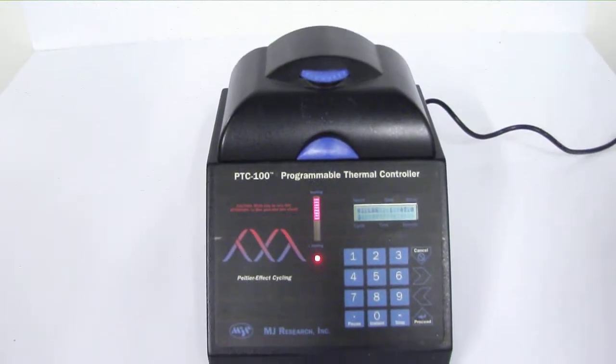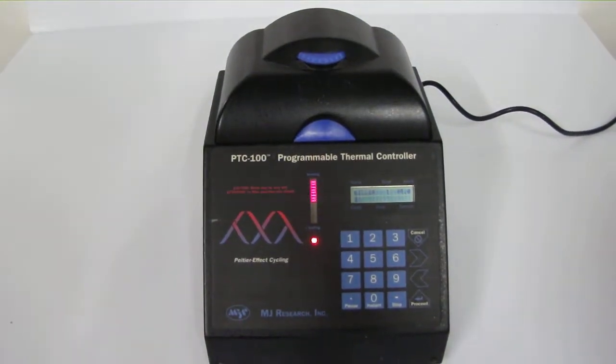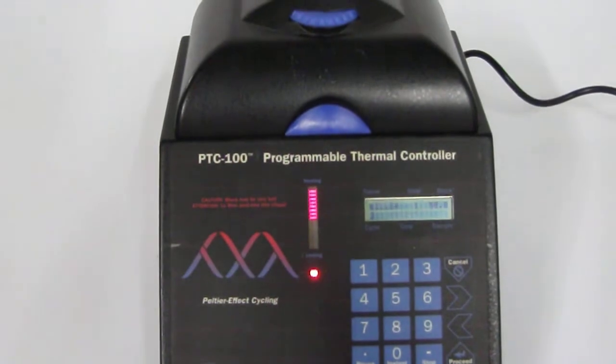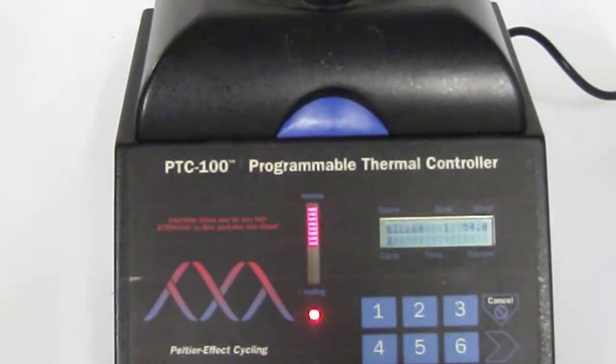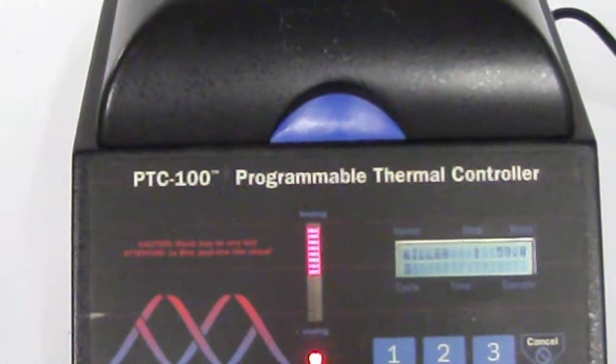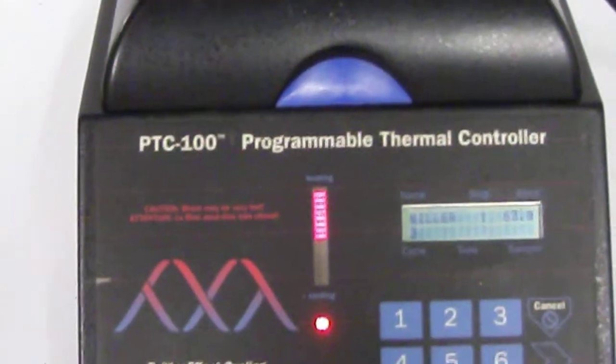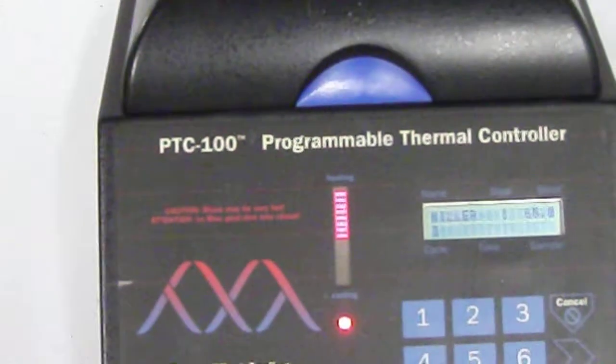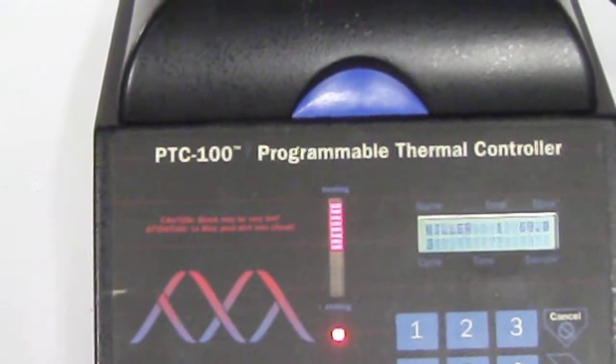In addition, it has the following features. Peltier Effect heat pumps, robustly designed for repeated cycling, deliver the full temperature range of 0 to 100 degrees Celsius electronically with speedy ramping rates of up to 2.5 degrees per second.